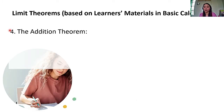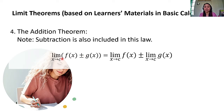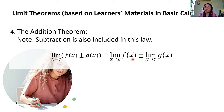Number 4: the addition theorem. Note that subtraction is also included in this law. The limit of F of X plus or minus G of X as X approaches C is equal to the limit of F of X as X approaches C plus or minus the limit of G of X as X approaches C. The limit of the sum or difference of two functions is equal to the sum or difference of the two individual limits, which equals L plus or minus M.